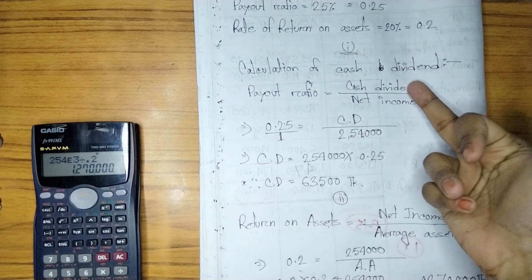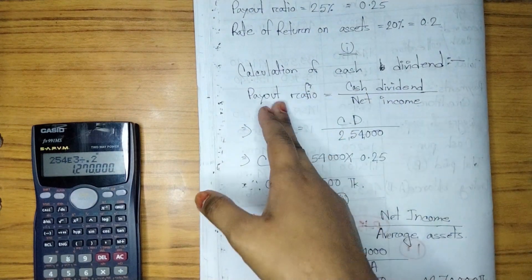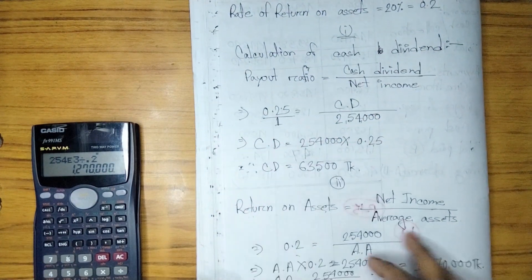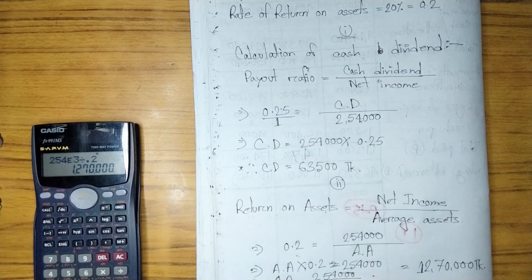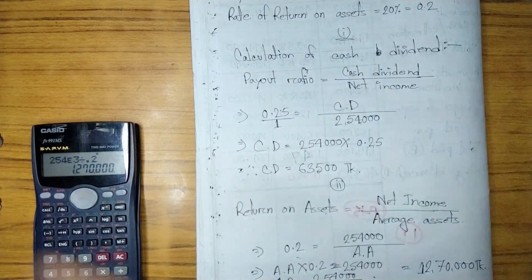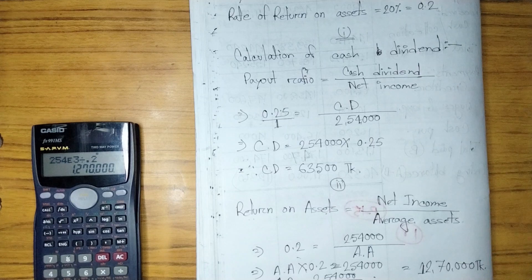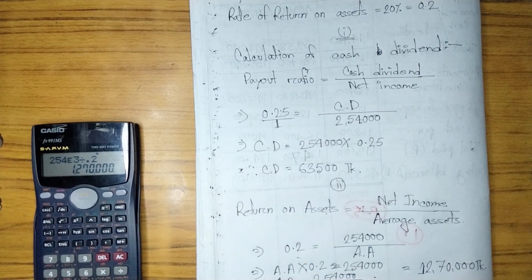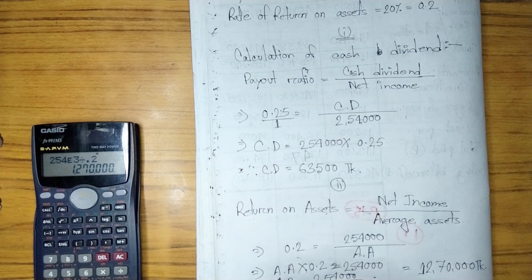This is the calculation of cash dividend, net income, payout ratio, return on assets, and average assets. I hope you found this video helpful. If you have any questions, please don't forget to watch these videos. Take care of yourself. Allah Hafiz.